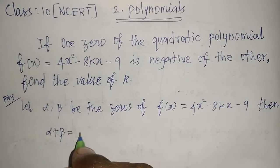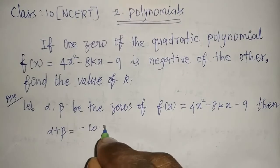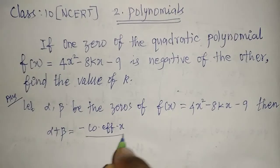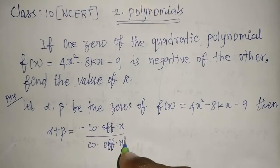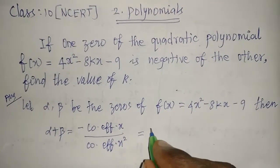Alpha plus beta equals minus coefficient of x. This formula we need to remember: minus coefficient of x divided by coefficient of x square. This is the sum of zeros formula.